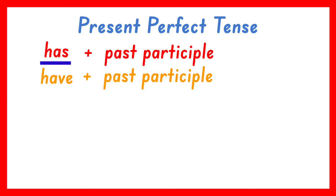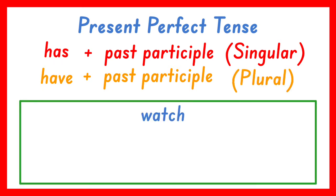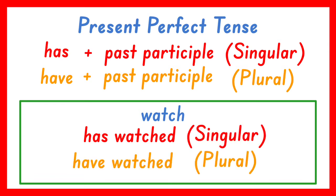Has is used if the subject in the sentence is singular or only one, while have is used if the subject in the sentence is plural or more than one. Let us take the verb watch as an example. The present perfect tense of this verb is has watched if the subject is singular and have watched if the subject is plural.